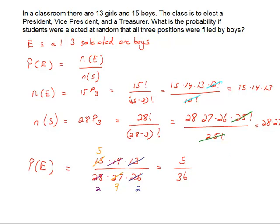So, we have a five out of thirty-six chance that, if we were to randomly elect students, that all three of those positions would be filled by boys.